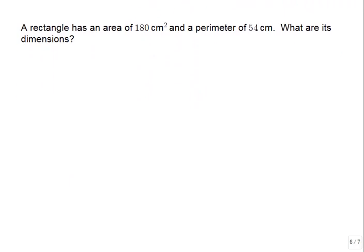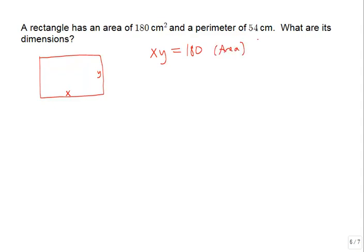Now let's look at a couple of word problems. A rectangle has an area of 180 square centimeters and a perimeter of 54 centimeters—what are its dimensions? We draw a rectangle with length x and width y. Area equals length times width: xy equals 180. Perimeter equals two lengths plus two widths: 2x plus 2y equals 54.